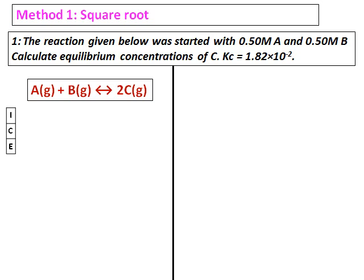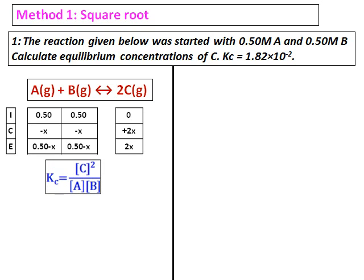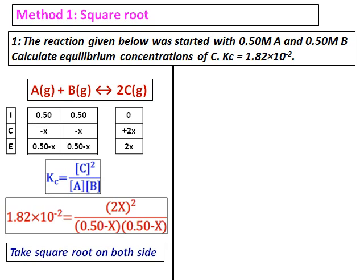Construct the ICE table. When you set up the equation, you realize that Kc equals 1.82 times 10 to the power of negative 2, which equals 2x raised to the power of 2, divided by (0.50 minus x)(0.50 minus x). If you look carefully, you can see that taking the square root on both sides allows you to easily solve it.